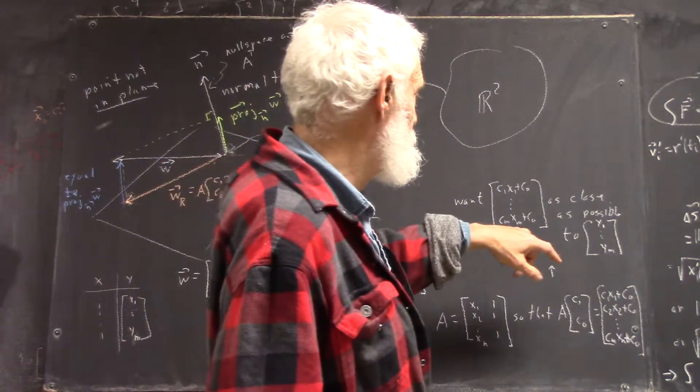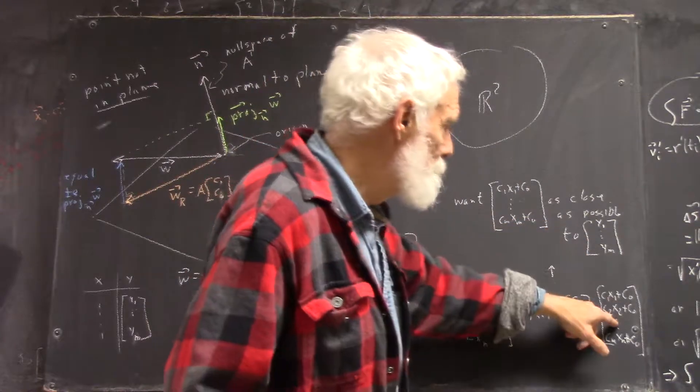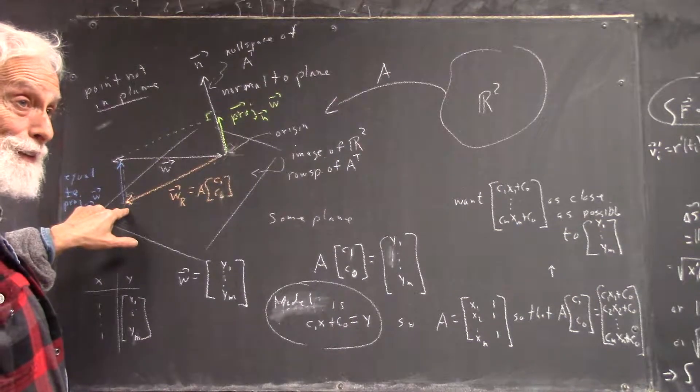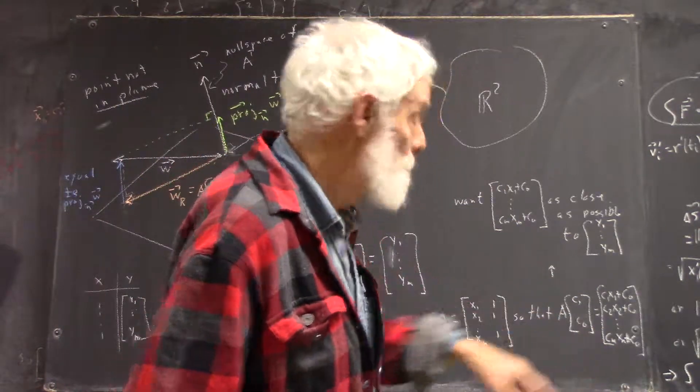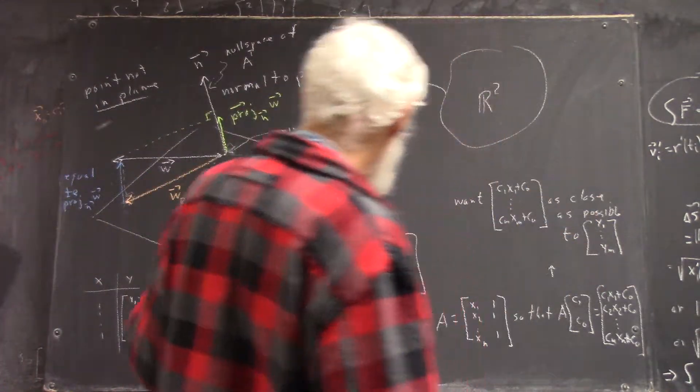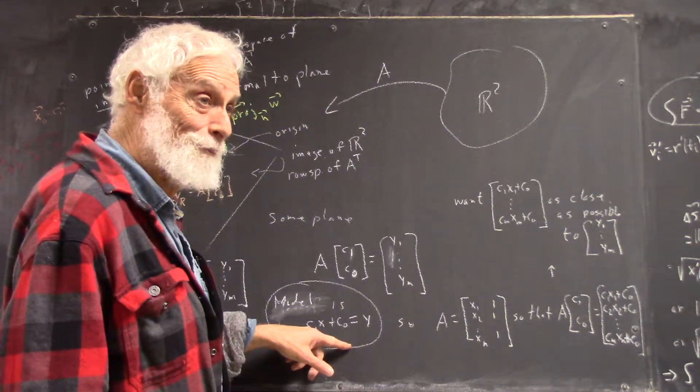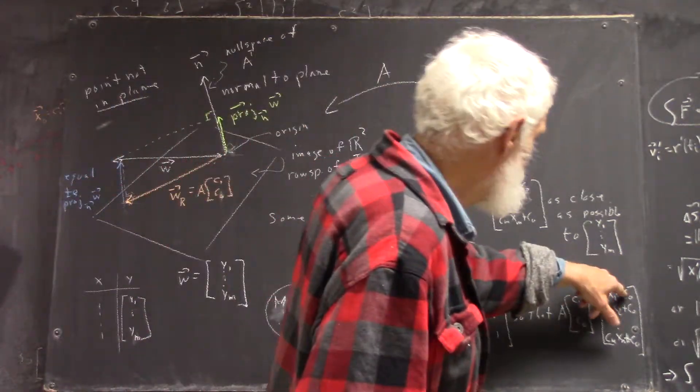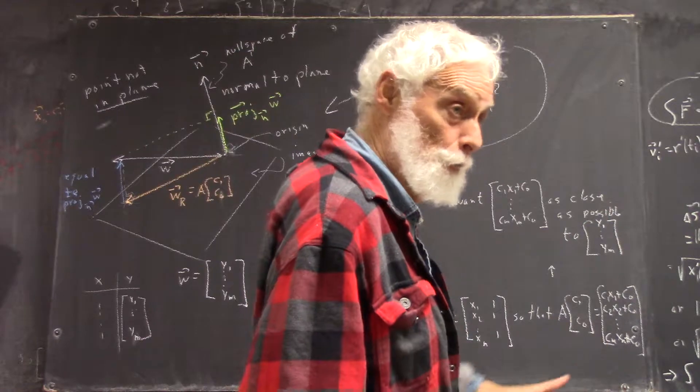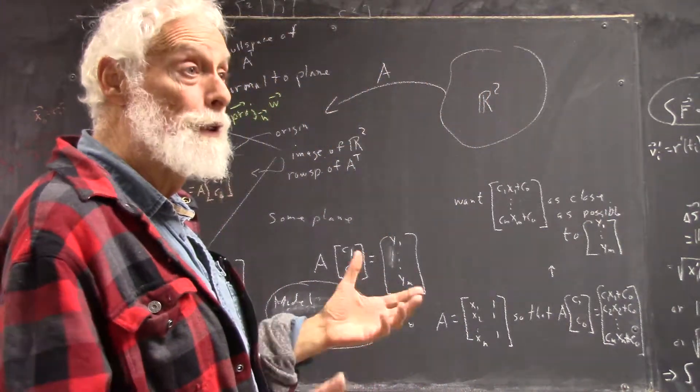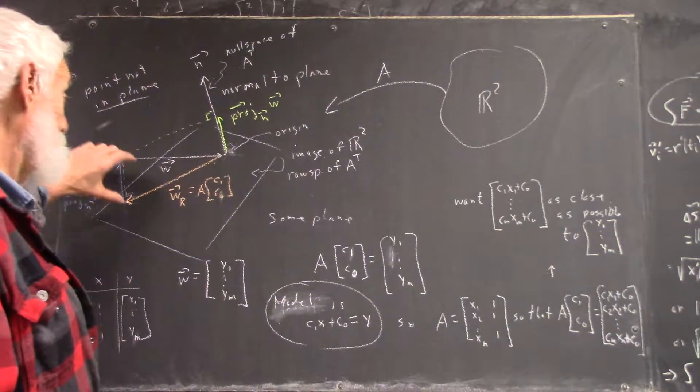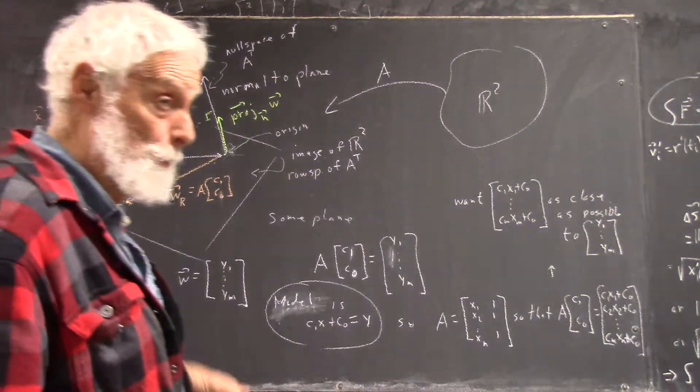And we want it as close as possible. Sorry, this vector has got to be in the image space. It's here. And we don't know what it is because we don't know what C1 and C2 are. But we want it to be as close as possible to Y1 through YM. Why is that? Because Y is supposed to equal C1X plus C0. So C1X1 plus C0 should be close to Y2 and so forth, as close as possible. And that will minimize the squares of the distances.